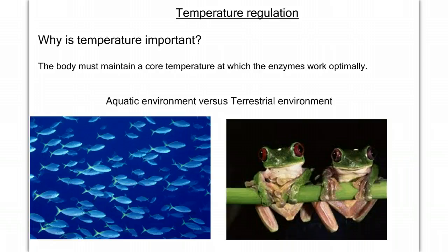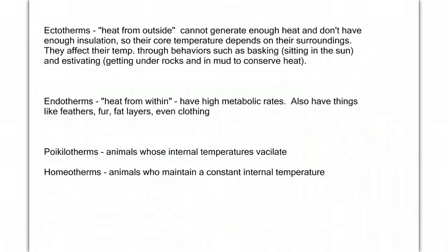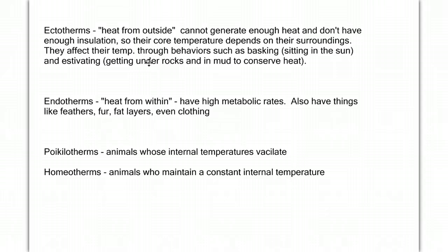Before we go further, we need to define some terms: ectotherm, endotherm, poikilotherm, and homeotherm. Ectotherm — 'ecto' means from outside, 'therm' means heat — so heat from outside. We do not use the terms cold-blooded and warm-blooded; instead we use ectotherm and endotherm. Fish, for example, would have been considered cold-blooded, but if the water in your fish tank is warm, then your fish's blood is warm. So they're not cold-blooded, but they are ectotherms — their body temperature depends on the external temperature, because they cannot generate enough heat or maintain enough insulation to regulate their own body temperatures.